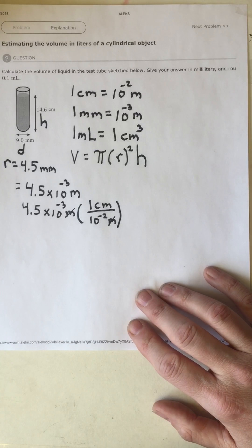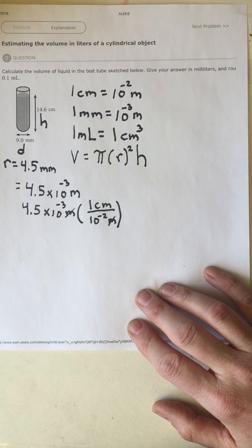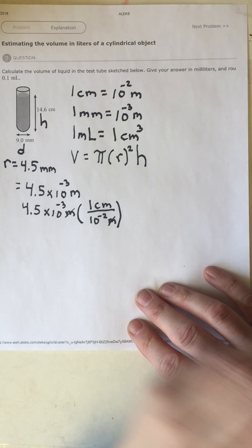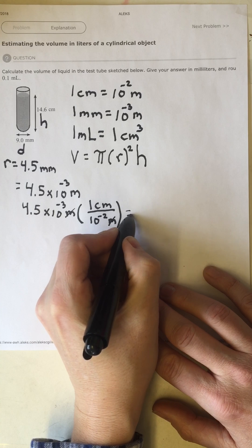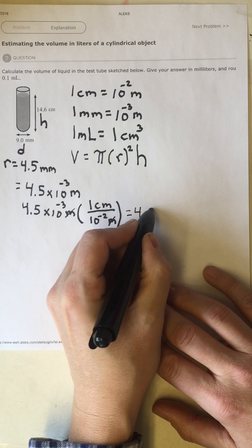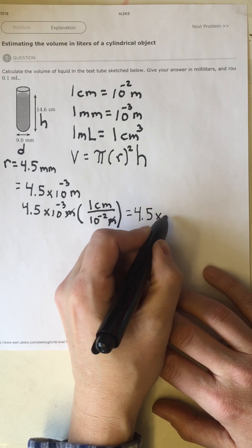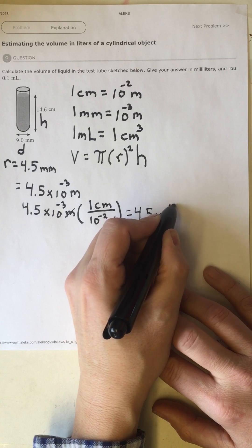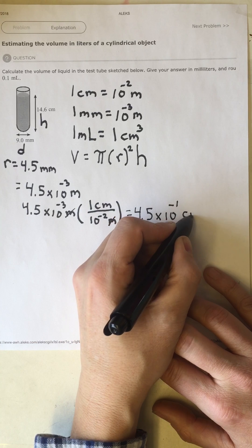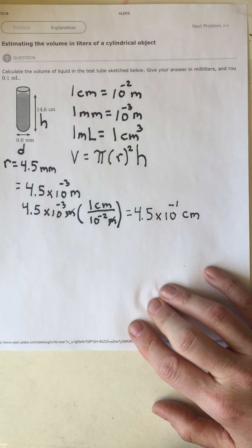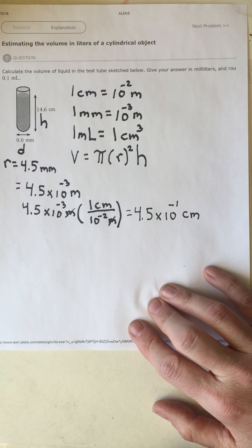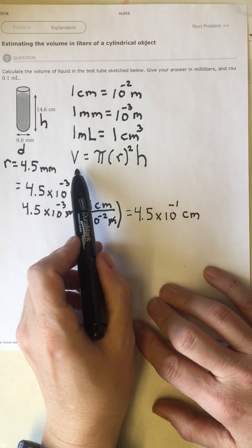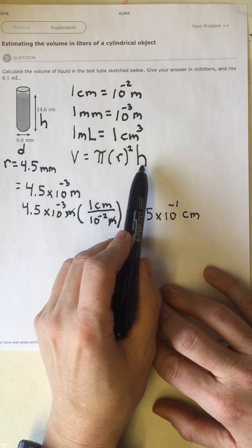Using dimensional analysis, meters divided by meters equals one, giving us an answer in centimeters. So 4.5 times 10 to the negative 3 divided by 10 to the negative 2 gives us 4.5 times 10 to the negative 1 centimeters. Now we have both the radius and the height in centimeters, so we can use the cylinder volume formula: V = pi r squared h.